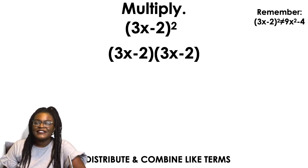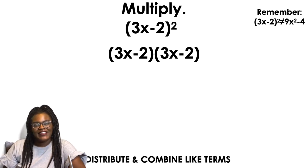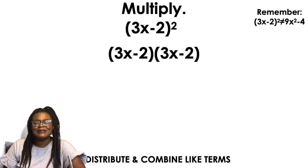The error that so many of us make. You see in the corner how it says 3x minus 2 squared does not equal 9x squared minus 4? This is such a big mistake. Please, please, please, please, please, please, please. Do not make this mistake.